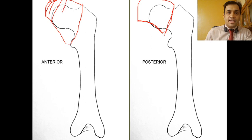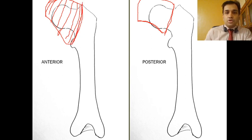On the anterior aspect, the capsule extends from the acetabular labrum to the intertrochanteric line distally. On the posterior aspect, the same capsule extends from the acetabular labrum to the intertrochanteric crest distally.